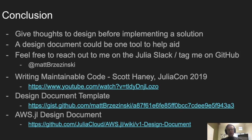In conclusion, giving some thought to your design before implementing a solution is very important. If you create a design document and want feedback, or just want to chat about software development, feel free to reach out to me on the Julia Slack or tag me on GitHub — my handle on both is @MattBrzezinski. There's a link to the design document template as well as the AWS.jl design document. I'd also highly recommend Scott Haney's JuliaCon 2019 talk on writing maintainable code. Thanks for listening, and I hope you enjoy the rest of JuliaCon.